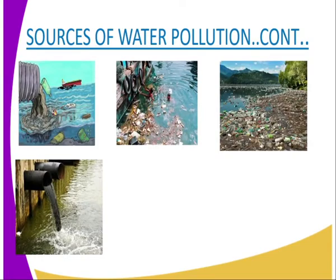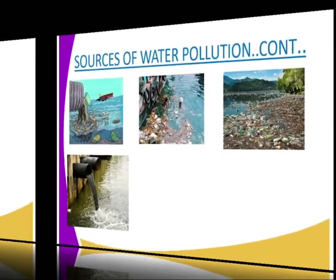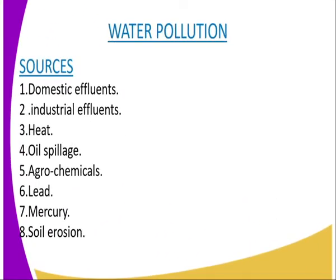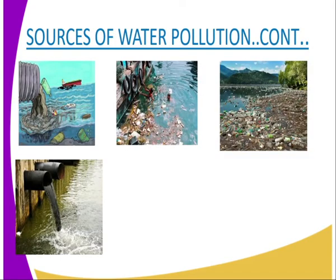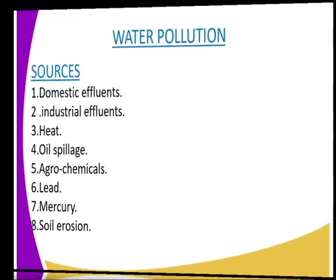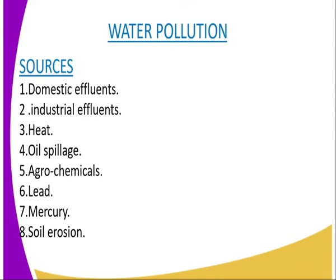We have our second source, which is industrial effluents, whereby several industrial effluents are directed to rivers, dams, marshes, and fresh water, as you can see from our diagram. We have our third source, which is heat — industries discharge hot water directly into water bodies. We have also seen excess oil spillage, agrochemicals, lead, mercury, and soil erosion as further sources of water pollution.